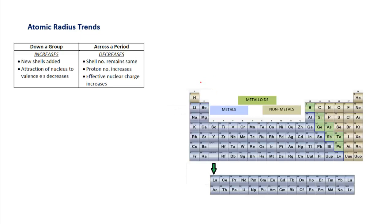What happens to the atomic radius when you move down the group? Take the first group: hydrogen with atomic number one has an electron in the first shell, and sodium has its valence electron in the third shell. As you go down the group the number of shells increases, so the distance from the center of the nucleus to the valence shell increases — meaning atomic size increases when you go from top to bottom in any group.